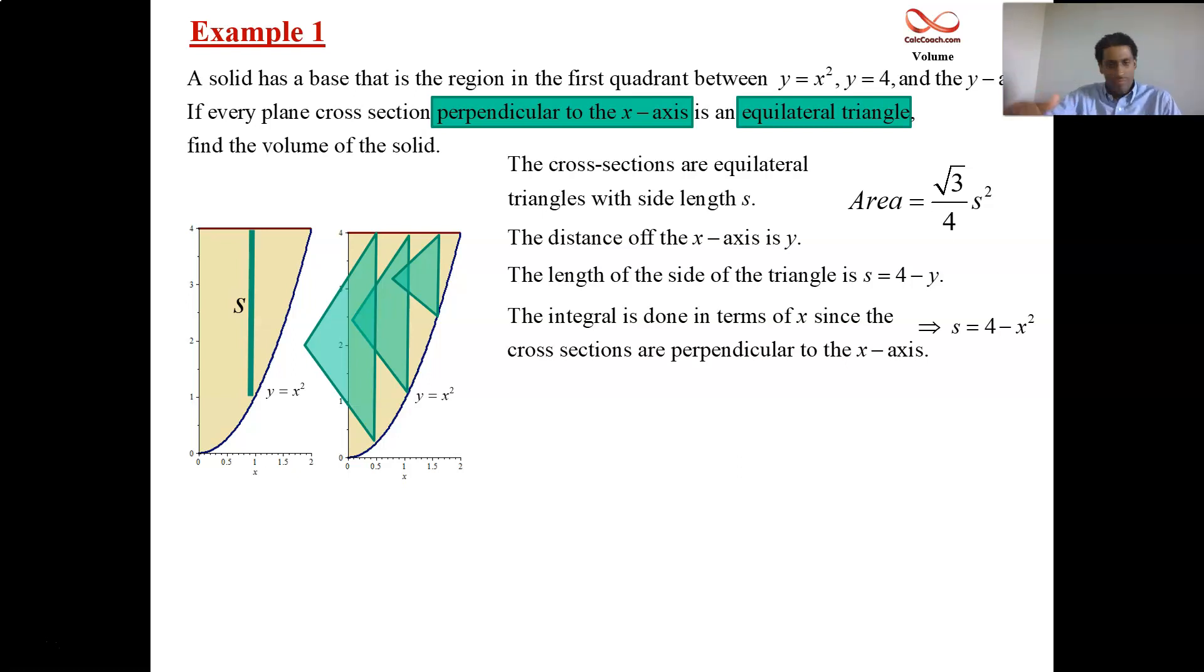And so 4 minus x squared is S. Grab the formula from your memory or from your cheat sheet if you're allowed one. It's our job to represent S in the right variable. Since we have a slice that is perpendicular to the x-axis, and it's moved from left to right, that's x changing. That's not y changing. Hold on to the next example in this video, and we'll see the y change.